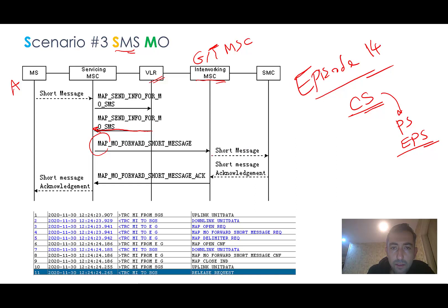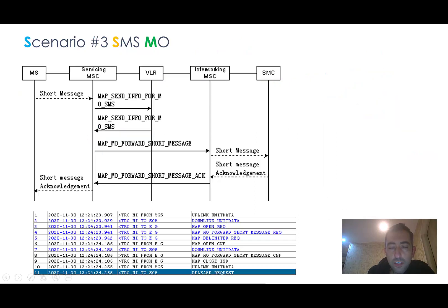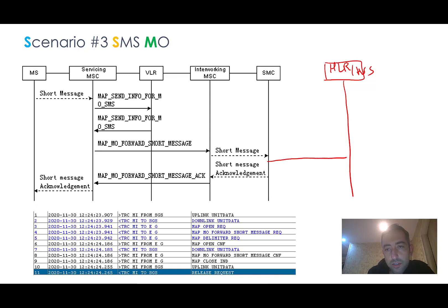The inter-working MSC sends short message signaling to the SMS center. The SMS center then sends an HLR inquiry — we can have an HLR or HSS here. The SMSC queries the B party, sending a Send Routing Information request to the HLR. The HLR or HSS sends back an SRI acknowledgement with the information of the serving MSC of the B party.